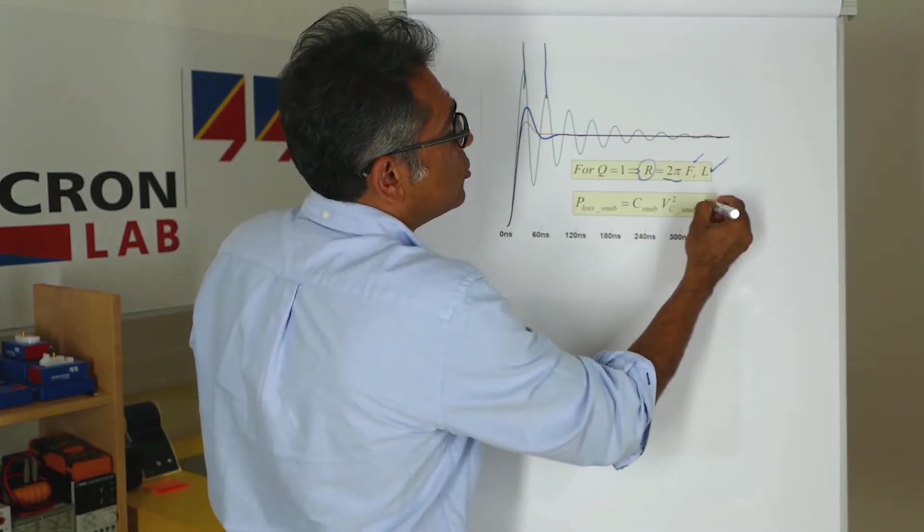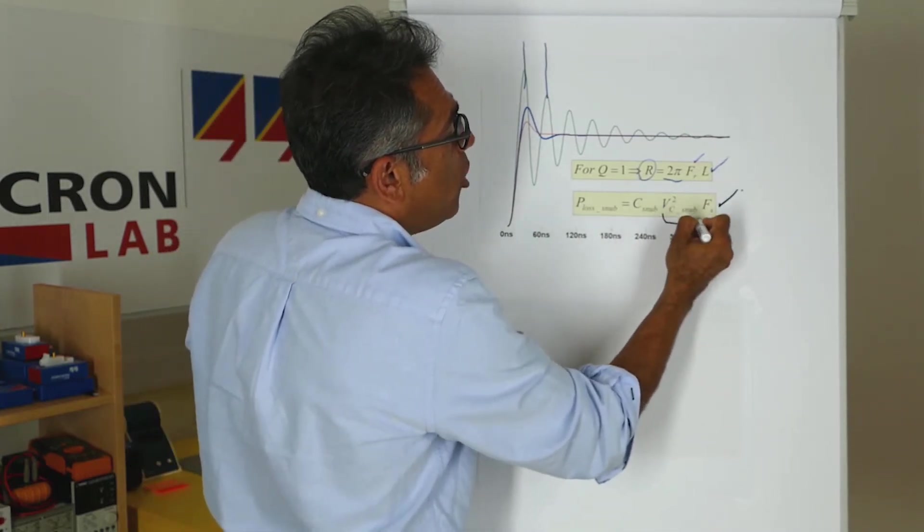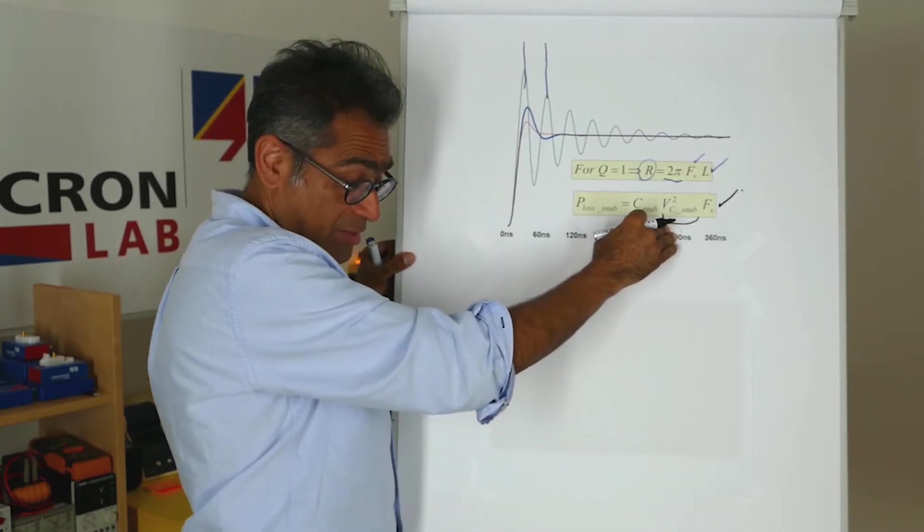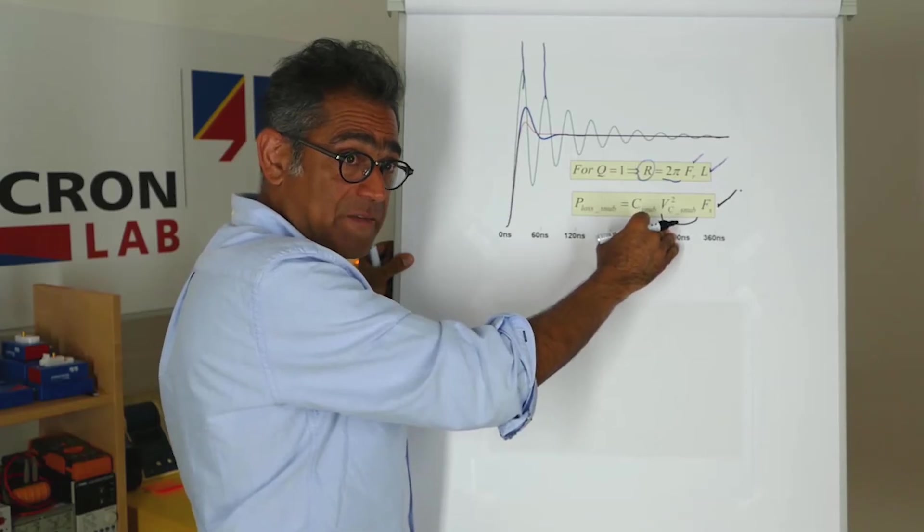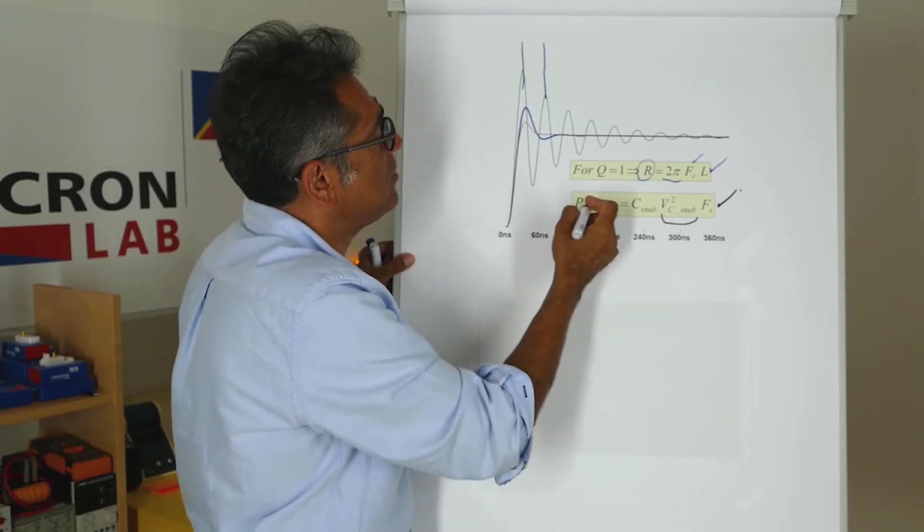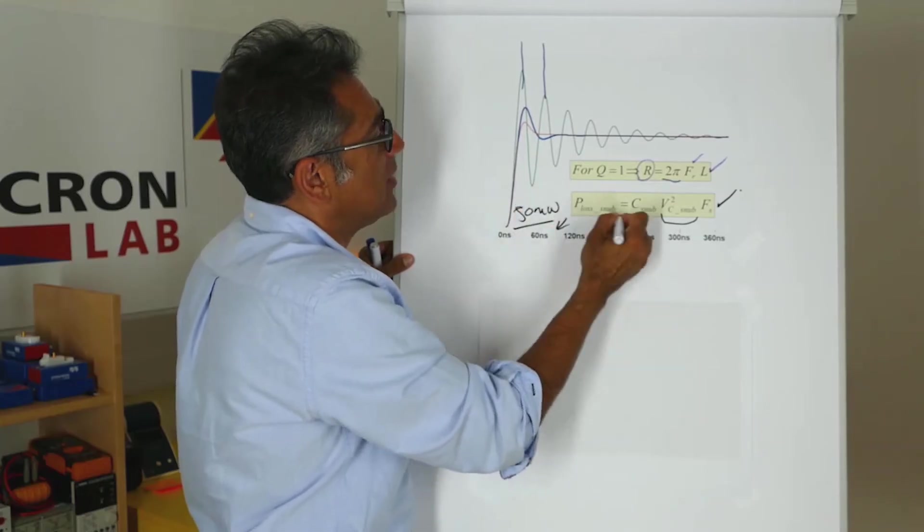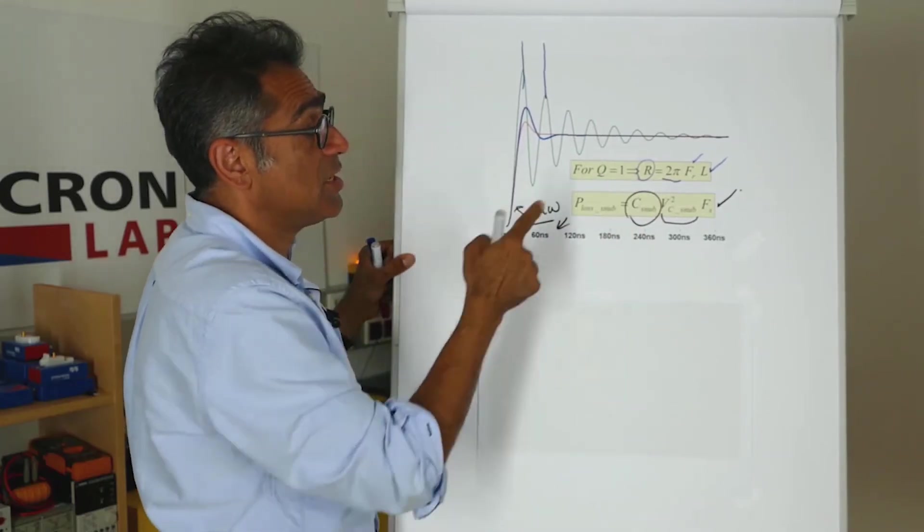You know the voltage across the snubber, that is the voltage referred, we talked about that in a different video, or you can measure it. Then you say, I'm going to allow, I don't know, 50 milliwatts, and therefore you can calculate the snubbing capacitor.